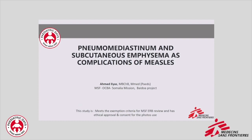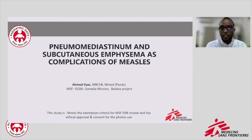The second case I would like to present is pneumomediastinum and subcutaneous emphysema as a complication of measles. As we all know, measles is one of the global public health concerns. In Somalia, we are facing a catastrophic prolonged measles outbreak since 2021, caused by multiple factors including low vaccination coverage, population displacement, prolonged ongoing droughts, and the COVID-19 pandemic.